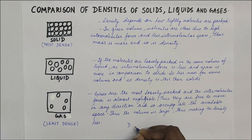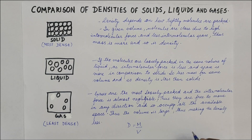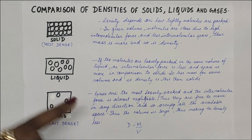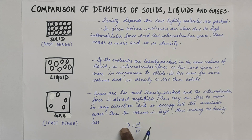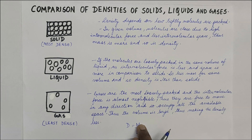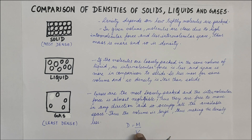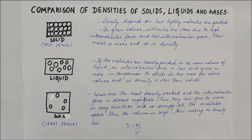One very important thing to remember is that when mass increases, density increases — it is directly proportional. And when volume increases, density decreases — it is inversely proportional. Now to start with solids, density is generally high in substances where the molecules are very close together or the intermolecular forces between them are very high.